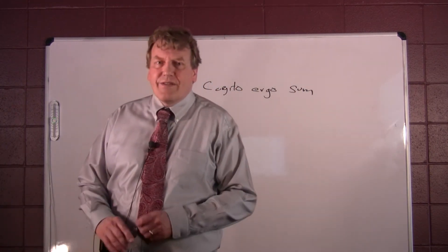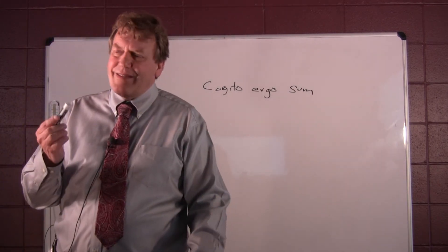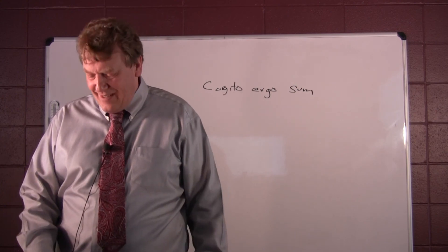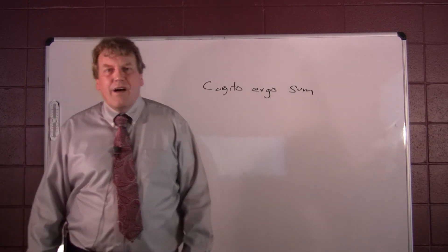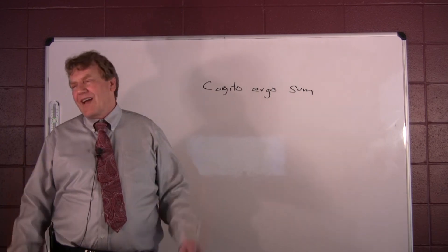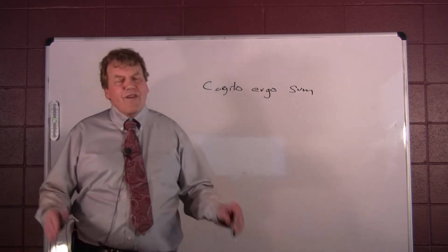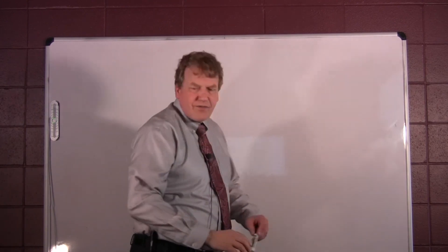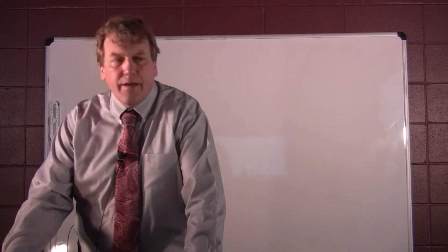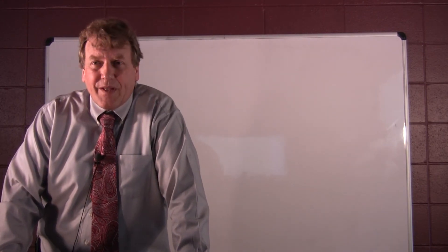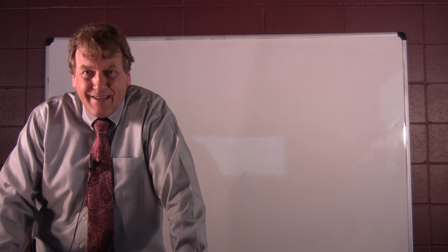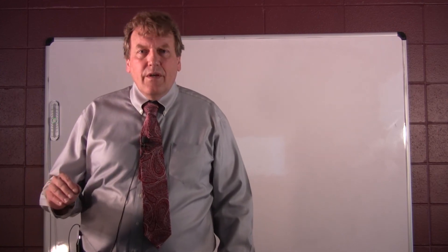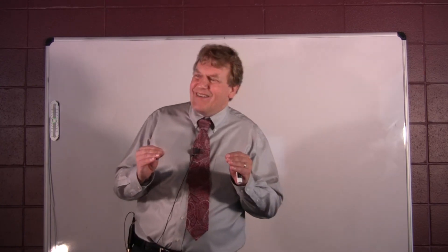Now he's going to set forth an argument for the existence of God that is based upon a clear and distinct apprehension of a particular idea that we have. We have an idea, according to Descartes, of an infinite being. We have an idea of perfection. This is a very famous argument for the existence of God. Don't be misled - this is not the ontological argument for the existence of God. He uses that in the fifth meditation. He says, I know that I exist, and as an existing being, I have this idea of an infinite being.